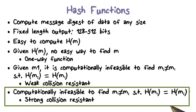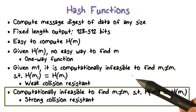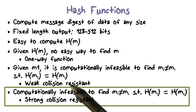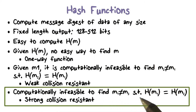The strong collision resistant property says that it is not possible to find any pair of two different messages so that they have the same hash value. It should be obvious that the strong collision resistant property implies the weak collision resistant property. The weak collision resistant property means that the hash function is collision resistant only to the specific, given input messages.